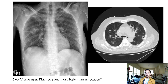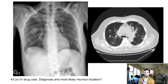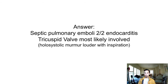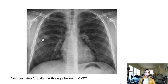Going deeper, the Step exam may ask what the murmur sounds like and what makes it louder or quieter. Since this is the tricuspid valve, it's likely regurgitation returning blood to the right side of the heart. You'll likely have increased murmur intensity with inspiration — that's the key learning point for right-sided murmurs.